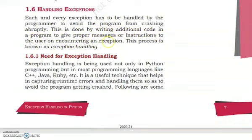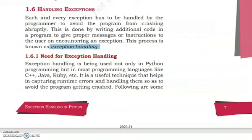This process is known as exception handling. When we write additional code — when we add a small message or instruction to the user the moment an error comes up — we give a message so that the error is resolved and cleared, and our code remains intact. That is called exception handling.